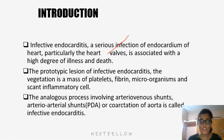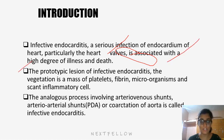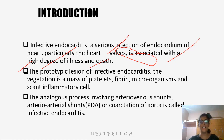The prototype lesion of infective endocarditis is a vegetation, which is very important. It is a mass of platelets, fibrin, microorganisms, and scant inflammatory cells.